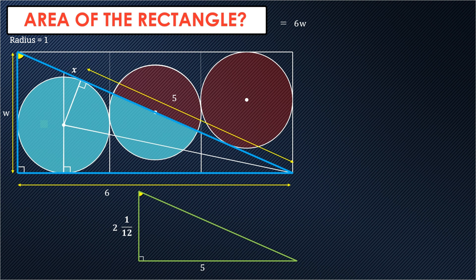We have the small triangle has a base of five, the large triangle has a base of six. So this is a ratio of five to six. Here we can just set up a ratio problem. So we can take W divided by two and one-twelfth equals six divided by five.